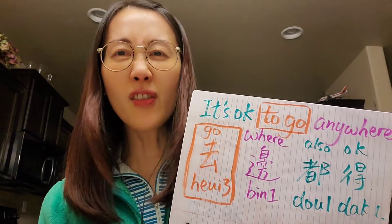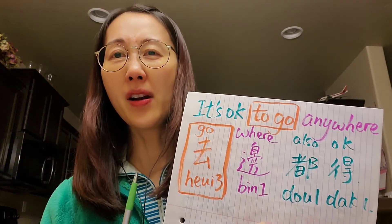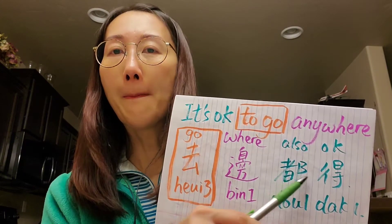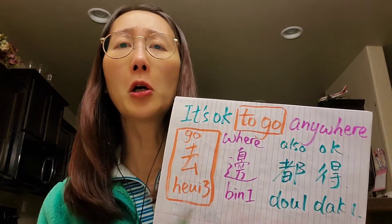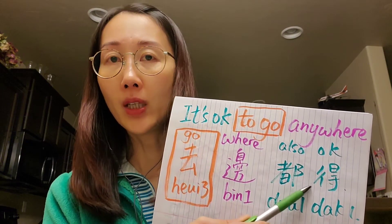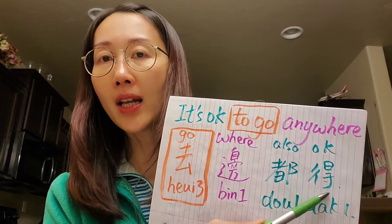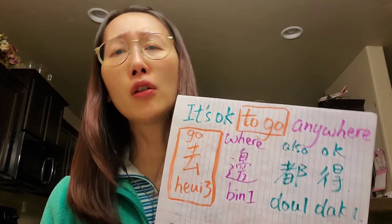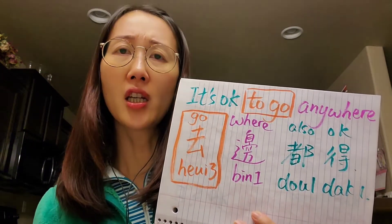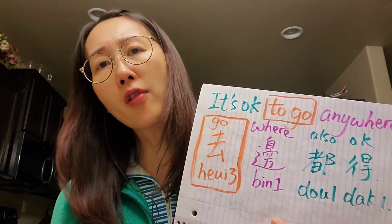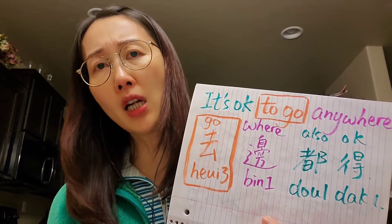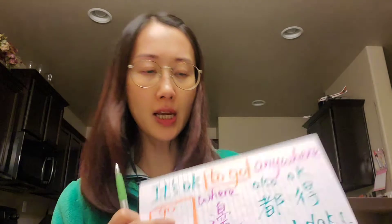If it is negative — 'it's not okay to go anywhere' — we put 唔 here, so it turns to negative: 去邊度都唔得. Just like now, because of COVID-19, we cannot travel, so it's not okay to go anywhere — 去邊度都唔得.